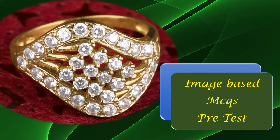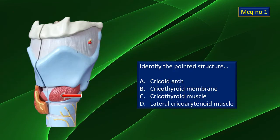Let's have a quick walk through the image-based MCQs. MCQ number one — here is a model of the larynx in a lateral view. There is a particular structure that has been pointed out with the flashing arrow. Identify it. There are four options; one of them is the correct answer.